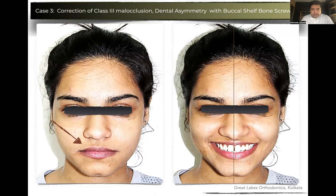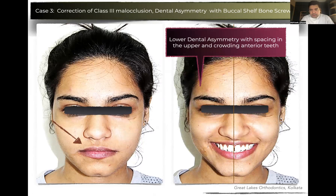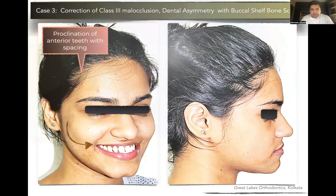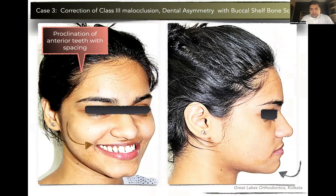The mandible was shifted to the left, which was basically a functional shift, not a true skeletal asymmetry. She also had lower dental asymmetry with spacing in the upper and crowding in the lower anterior teeth. It was a compensated Class 3 situation where she also had an edge-to-edge bite. She was unhappy with the aesthetic component of her smile because of spacing and the upper incisors were severely proclined. She also felt that the lower jaw was slightly big, but was not too concerned about it. She had a mild concavity in facial profile.